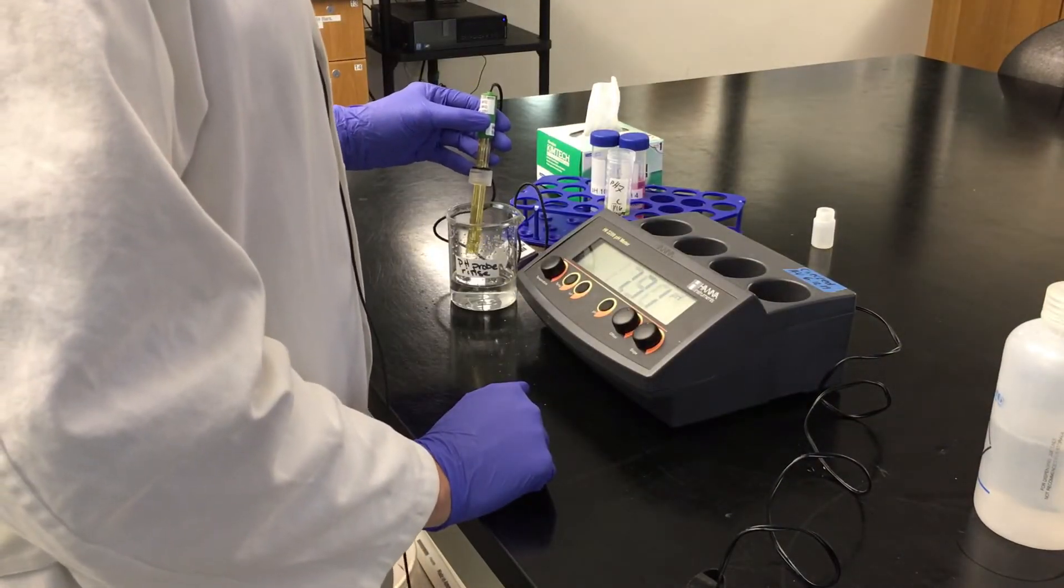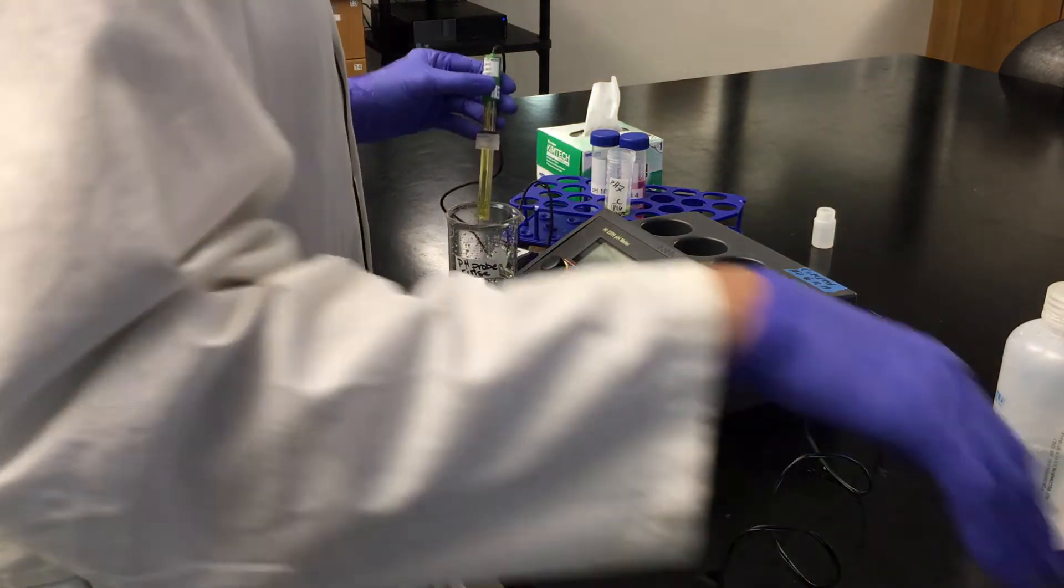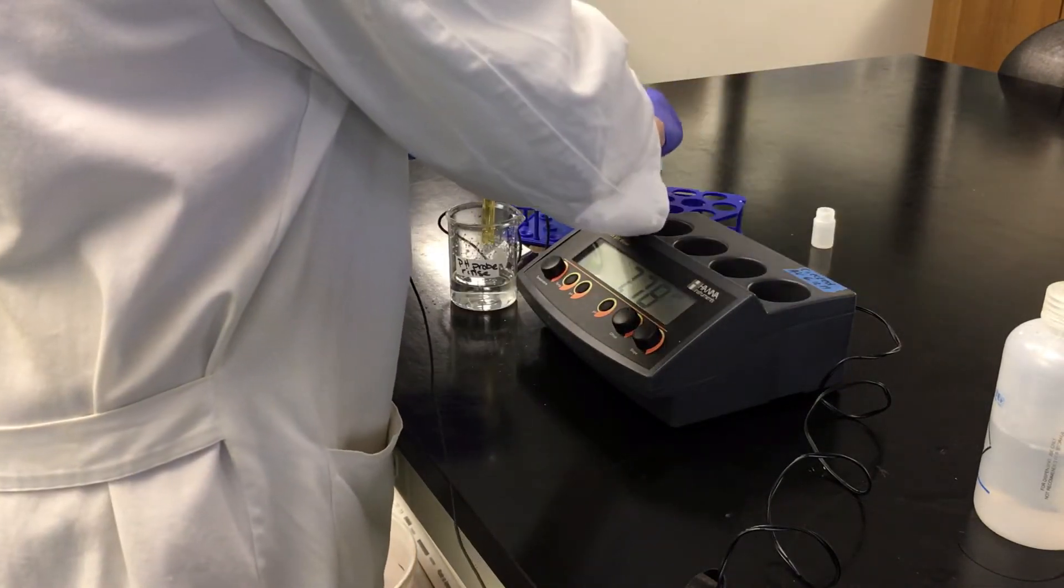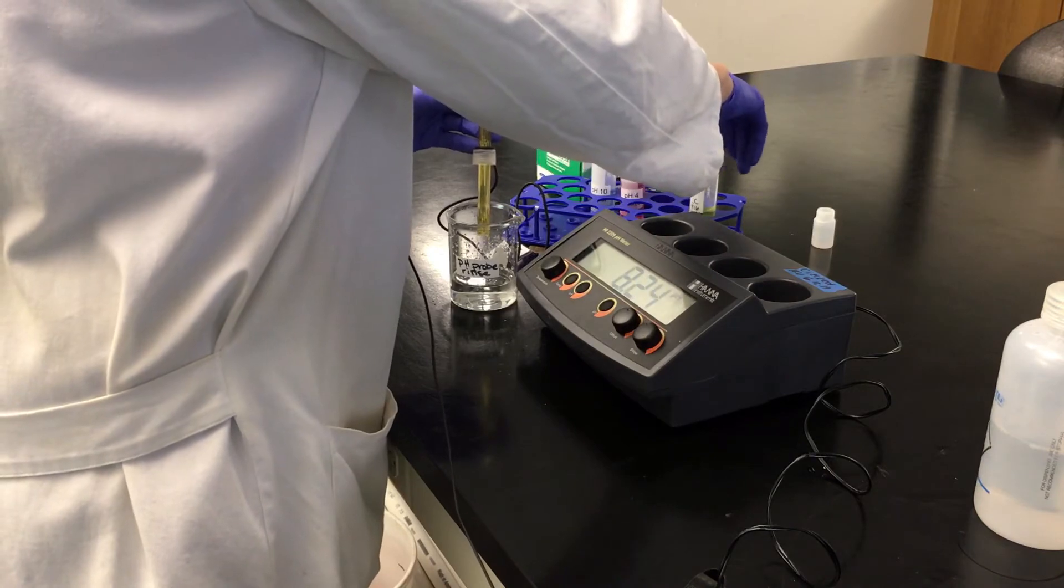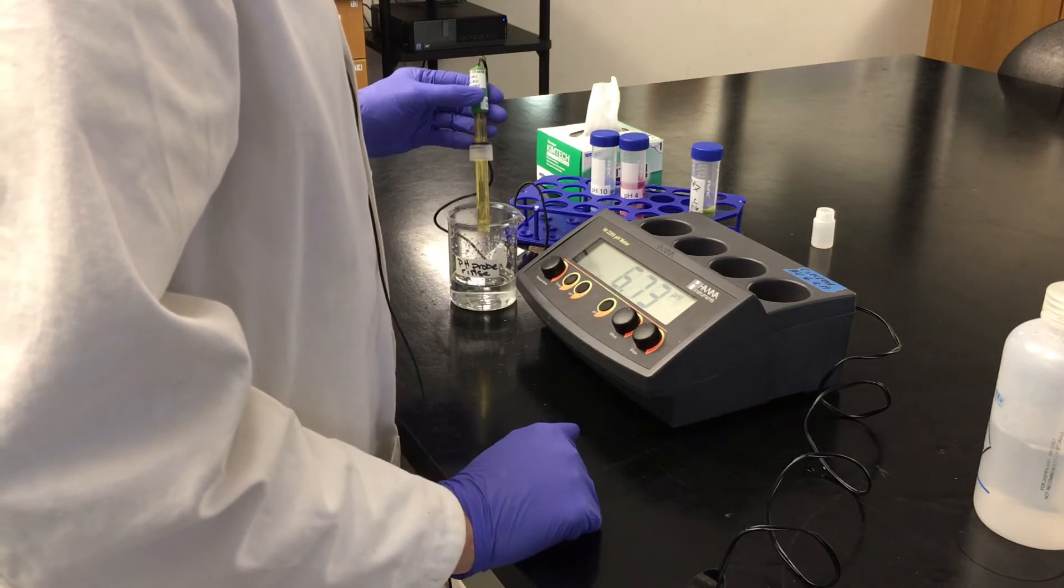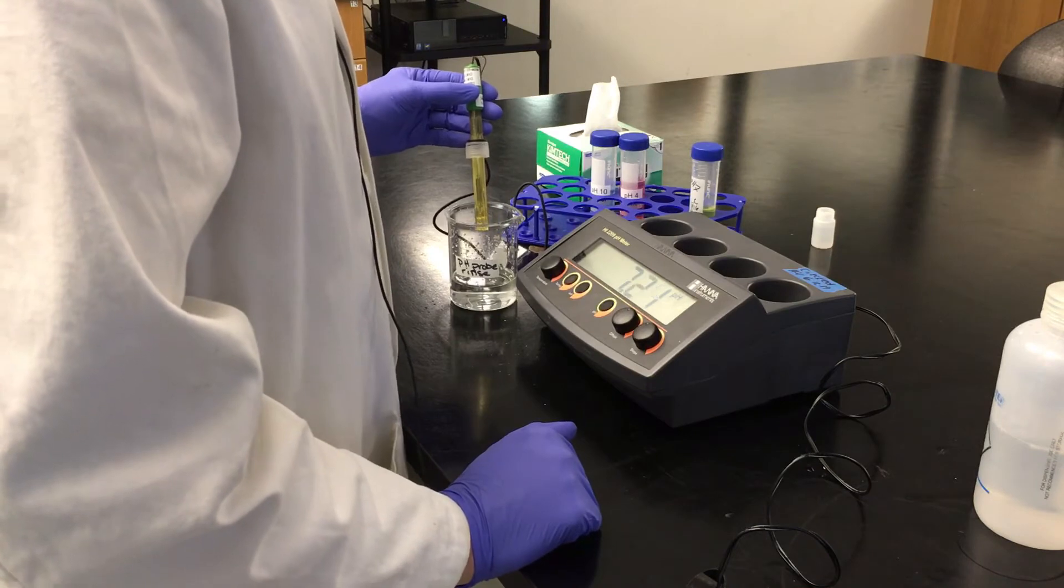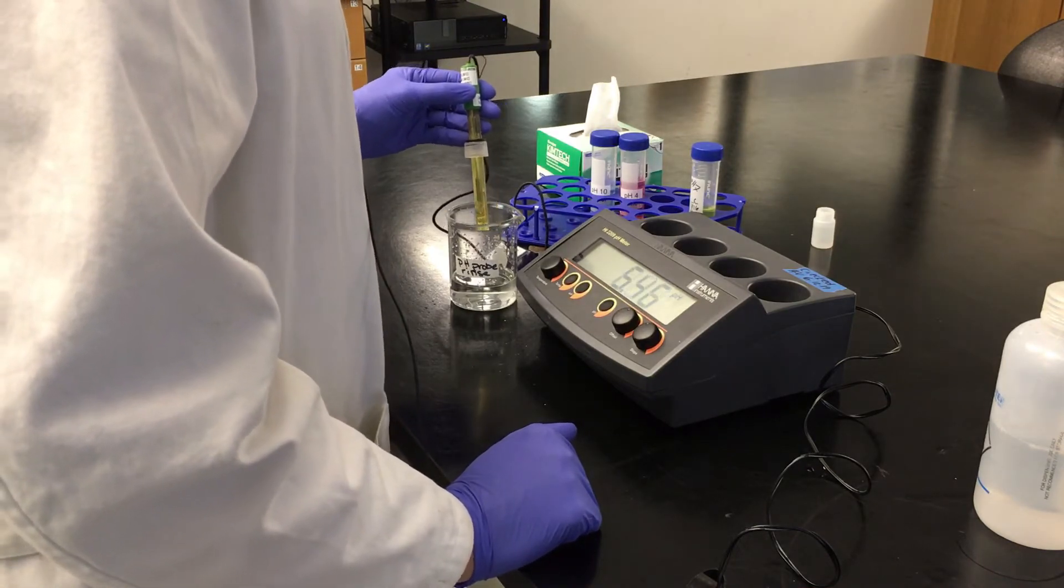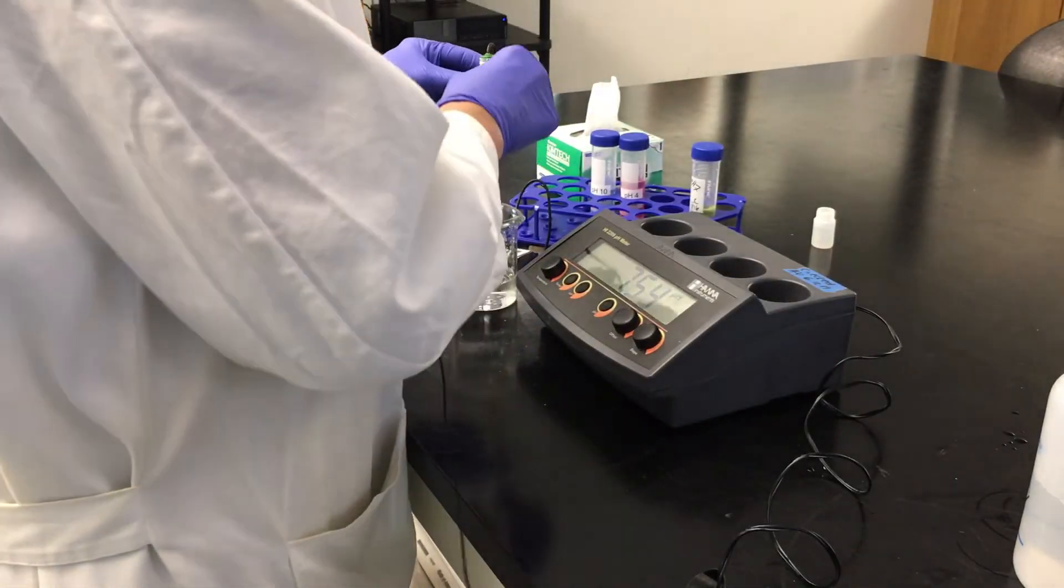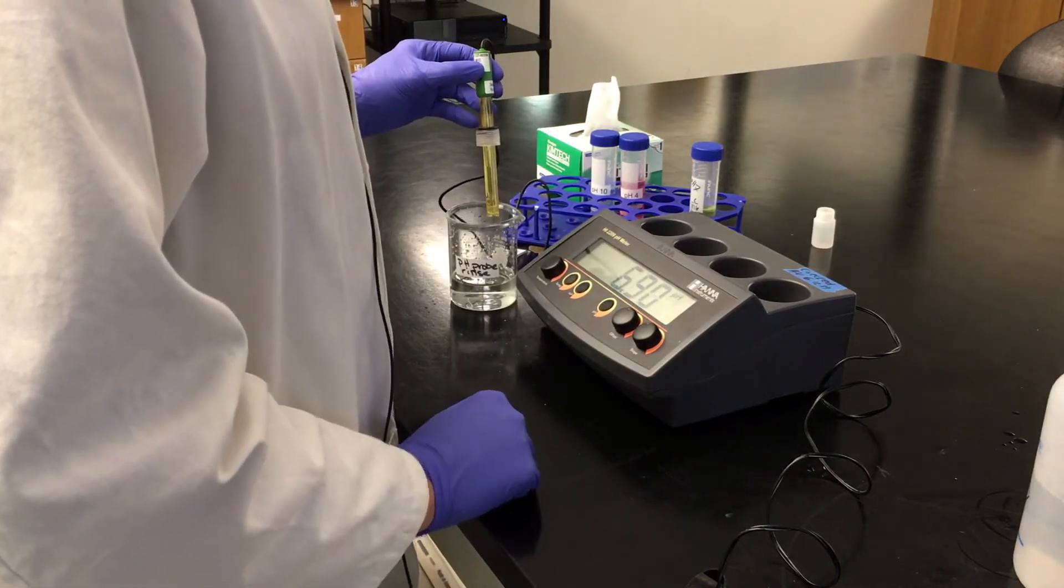Now we need to make a decision about which pH standard to use to calibrate with. We either have pH 4 or pH 10. And this will depend on the solution that I'm going to read. If I am expecting my solution to be between pH 4 and 7, then I will next calibrate with pH 4. If I'm expecting it to be more basic, then I would calibrate with pH 10. We're going to assume that the solution that we're going to measure is going to be a little more acidic, and it will be between pH 4 and 7.